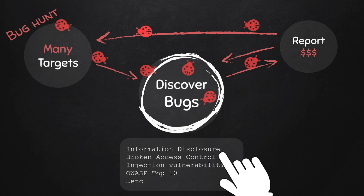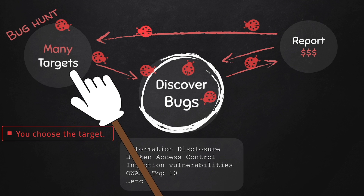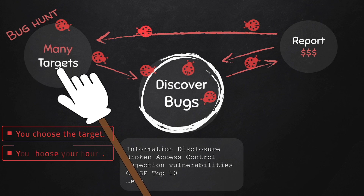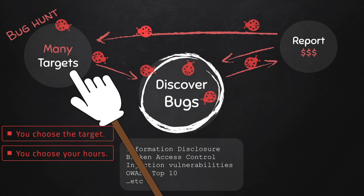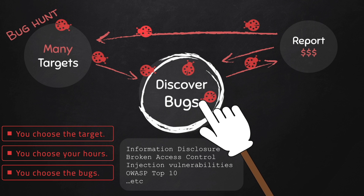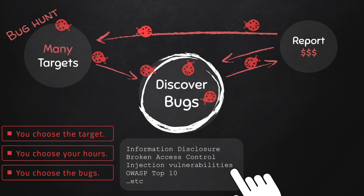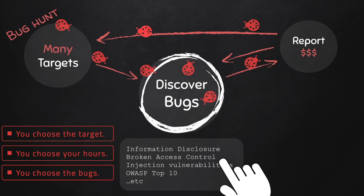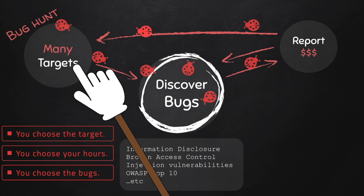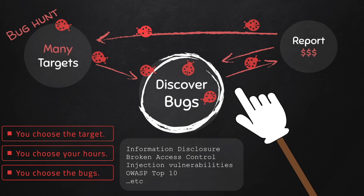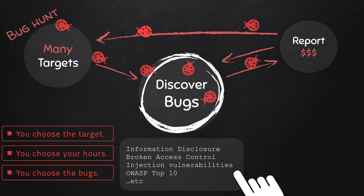In bug bounty programs, you are a freelancer and you have freedom with many things. You have the freedom of selecting your target, because there are a lot of websites that already have bug bounty programs. You have the freedom of your own time — you select when you want to do the tests, so you're not tied to a work schedule. You can work at night, in the morning, or do it part-time. You also have the freedom of selecting which bugs you want to discover. For example, you might decide you like injection vulnerabilities the most and want to always test for them, testing all websites with bug bounty programs for just that type. You don't have to test for everything.